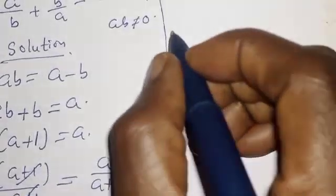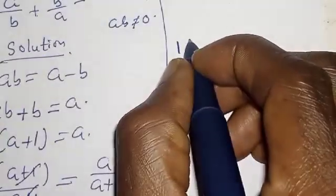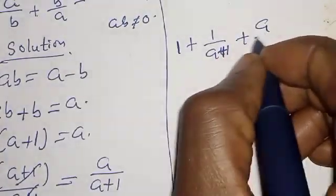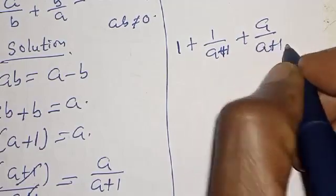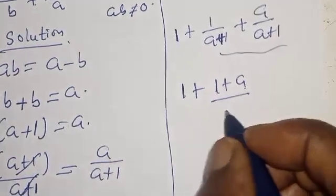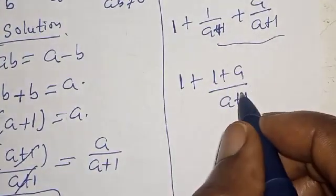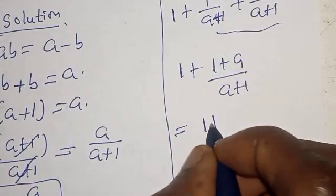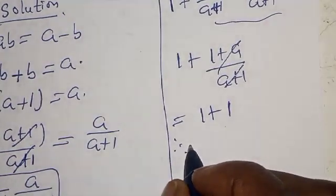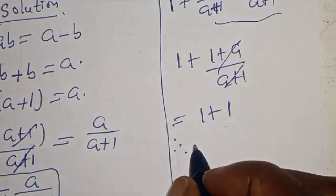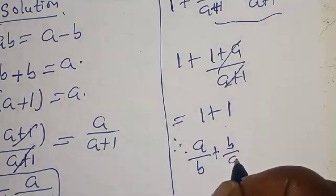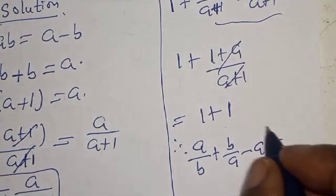We get 1 plus 1 over A plus 1 plus A over A plus 1. The common denominator is A plus 1, giving us 1 plus (1 plus A) over (A plus 1). Since 1 plus A and A plus 1 are the same, this cancels to give 1 plus 1. Therefore, A over B plus B over A minus AB is equal to 2.